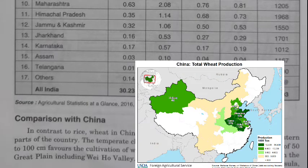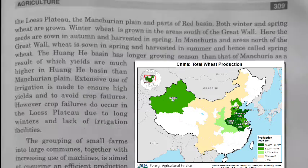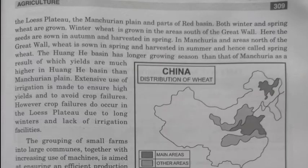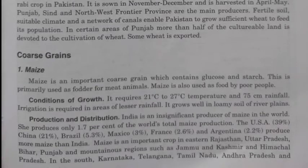Comparing with China: China is the largest producer of wheat in the world, mainly grown in the northern and northwestern parts where temperature is favorable and rainfall is between 50 to 100 centimeters. The main wheat cultivation areas in China include the Great Plain, the Wei River valley, the Shandong Peninsula, the Loess Plateau, the Manchurian Plain, and parts of the Red Basin.